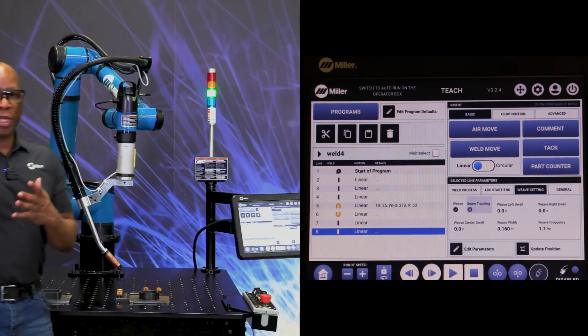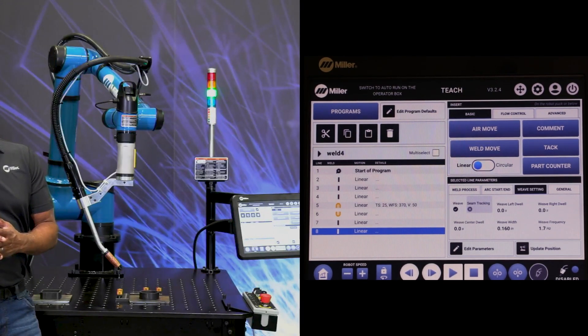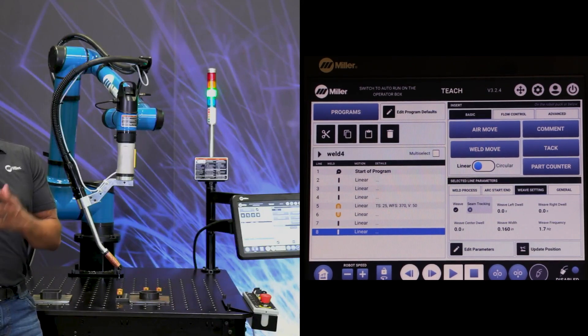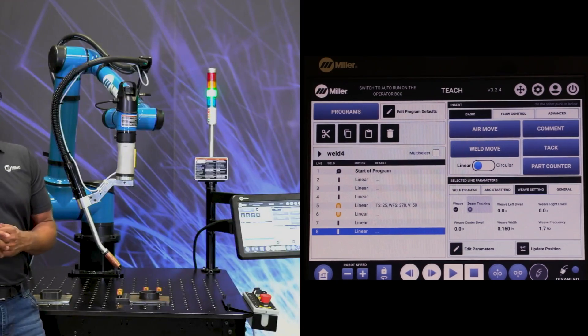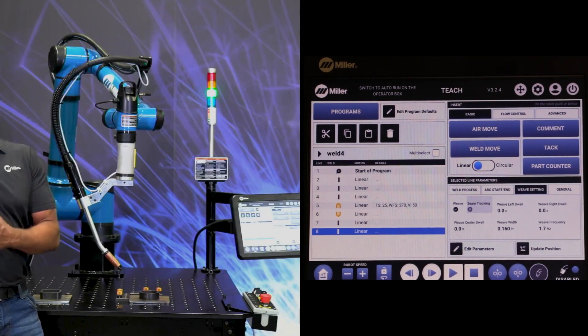If your next weld did not need a weave, you would have to turn off the weave when you get ready to edit. If your next point did not need a weave, you would have to turn the weave off on your next weld.